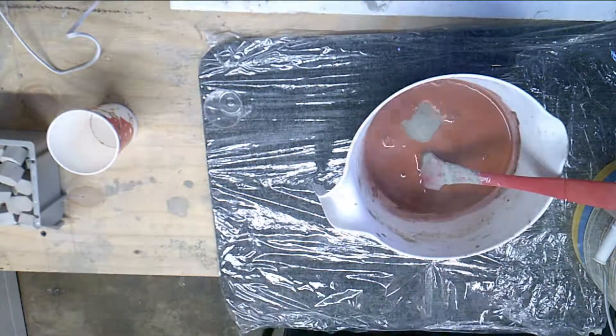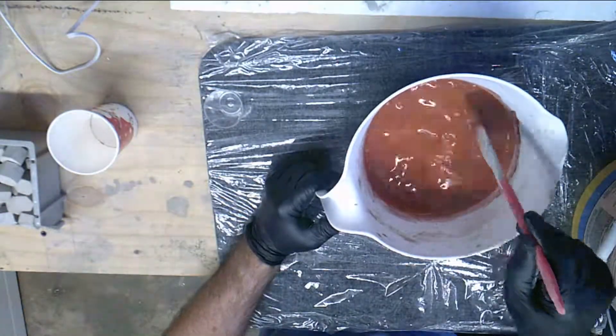Then we add the Quikrete Vinyl Patcher Cement and mix to a pancake-like consistency.